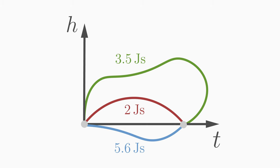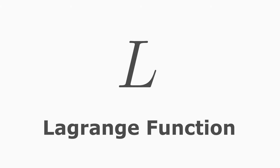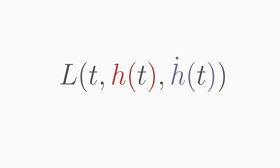But how do we calculate these values of the action? For this we need the Lagrange function L. It depends on the time t, on the function value h and on the velocity h dot of t. The Lagrange function has the unit of energy, that is joules.